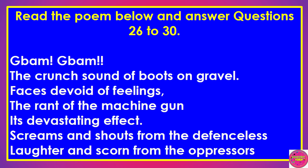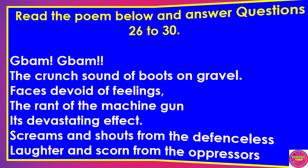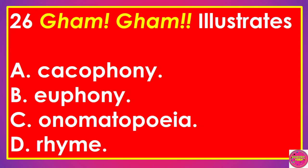Read the poem below and answer questions 26–30: 'The crying sounds of boots on gravel / Faces the void of feelings / That runs the machine guns / Devastating effects / Screams and sounds from the defenseless / Laughter and scorn from the oppressors.' Question 26: 'Bam Bam' illustrates: A. Cacophony, B. Euphony, C. Onomatopoeia, D. Rhyme. The correct answer to this question is C. Onomatopoeia.